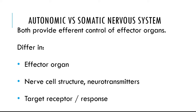While contrasting the autonomic versus the somatic nervous system, the effector organs are different. The effector organs of the somatic nervous system are our skeletal muscles, while the effector organs of the autonomic nervous system include smooth muscle, cardiac muscle, and glands. The efferent nerves are built differently between the somatic and autonomic nervous systems, the neurotransmitters are variable, and therefore the receptors and responses at the target are different as well.